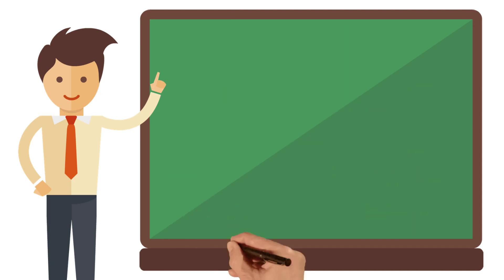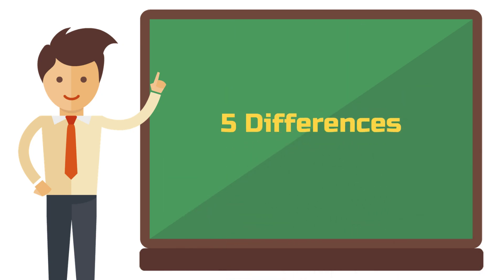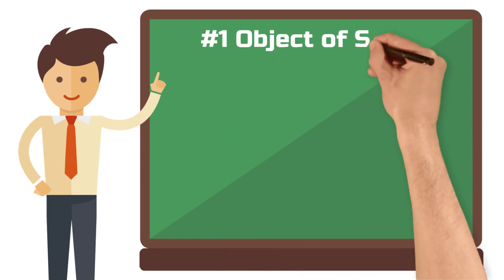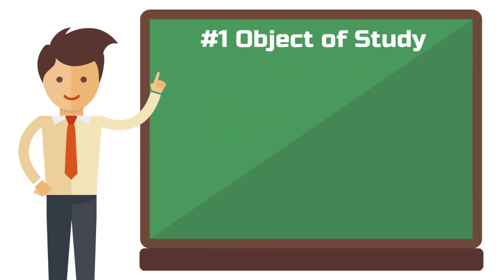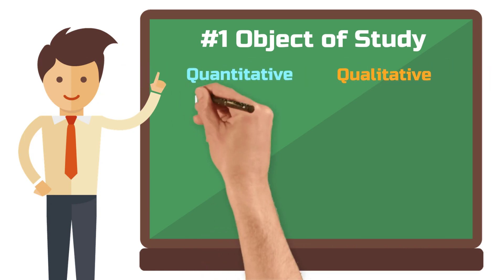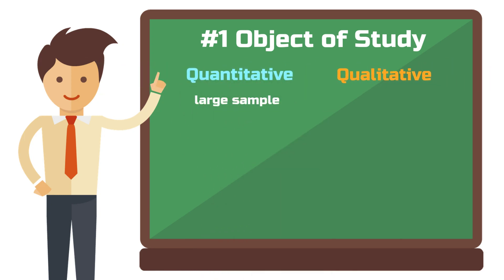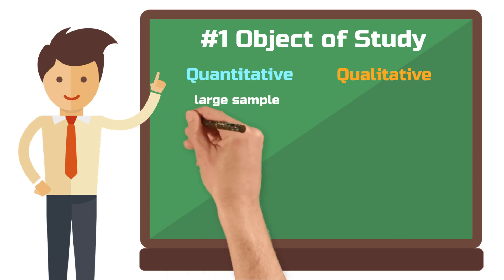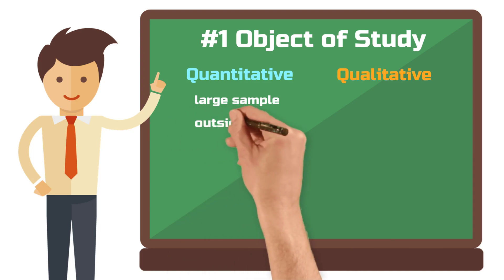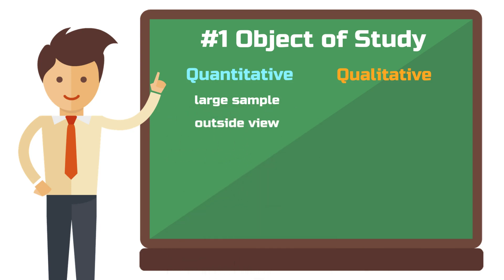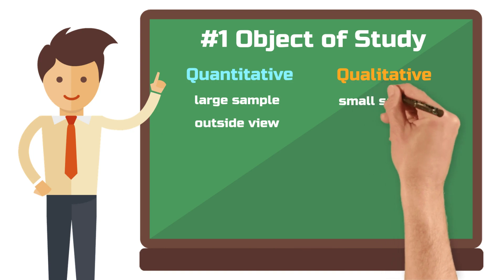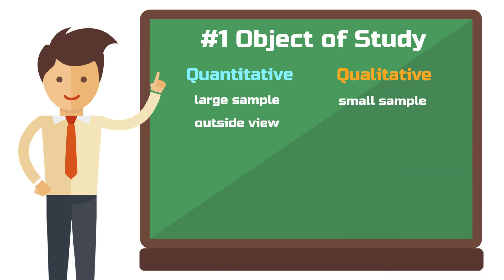Now let's look at the five different characteristics of both approaches. First, the object of study. Quantitative research investigates large samples and assumes more of an outside view. Qualitative research investigates small samples and assumes more of an inside view.